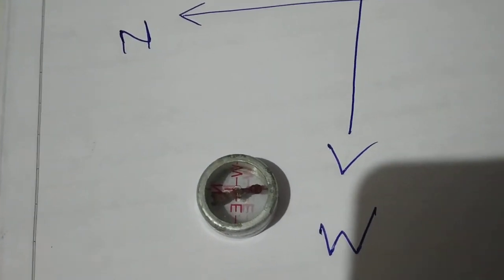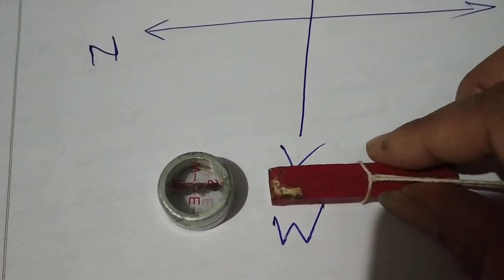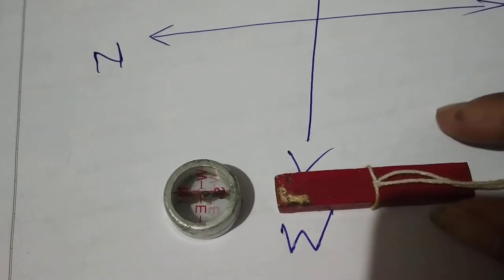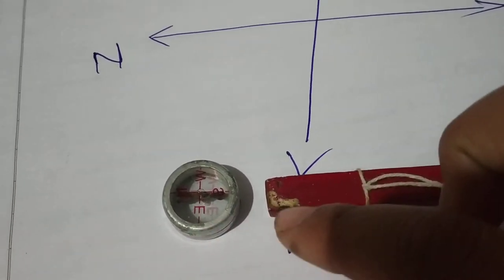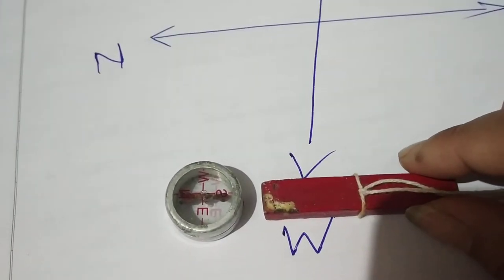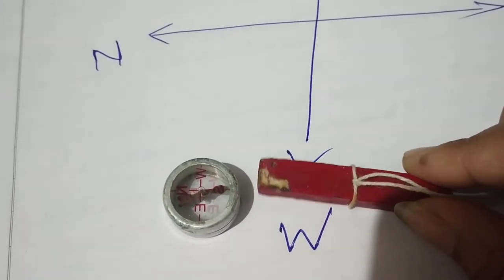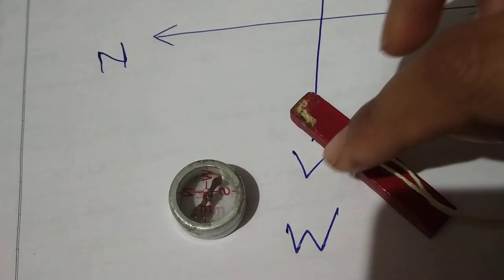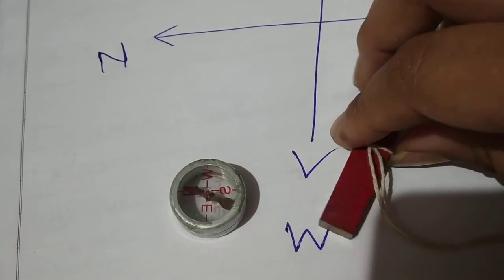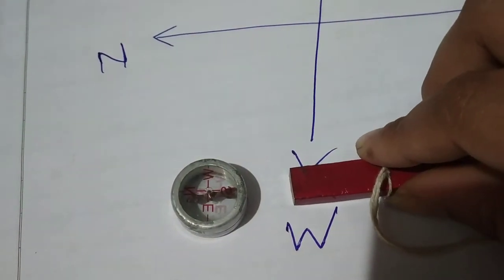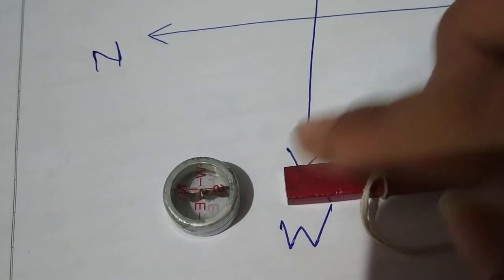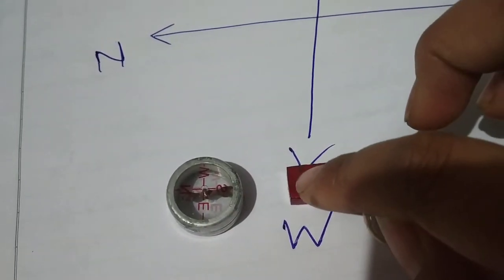If I bring the magnet towards it, the north pole towards it, you can see that the head is steady. Now if I change the direction of the bar magnet, you can see the needle rotating in the same way, and now the tail is attracting towards the south pole.